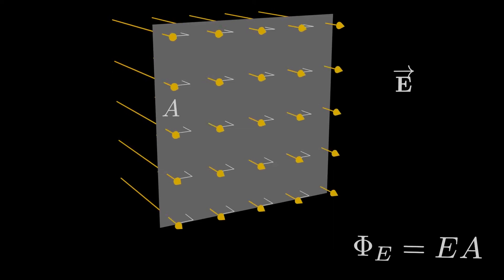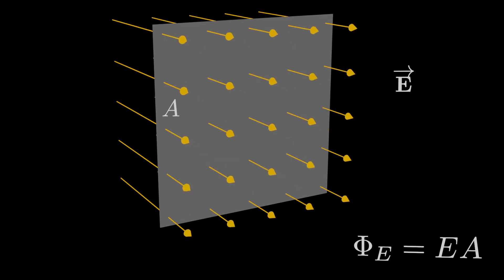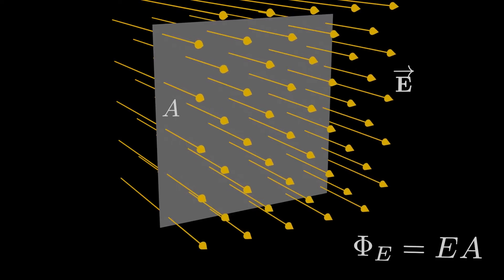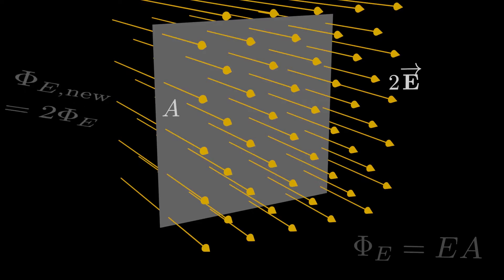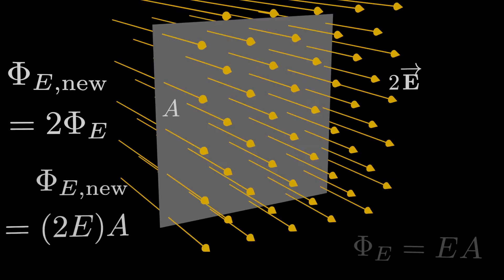The electric flux is actually related to the number of field lines going through this area. Suppose the electric field lines are twice as dense — if there's double the number of field lines, then the electric field is doubled, because the electric field is stronger where field lines are denser. Also, the flux is doubled because there are twice as many field lines, and the flux is proportional to the number of field lines going through. That's completely consistent with this formula: the flux has doubled, the field has doubled, but the area has stayed the same.